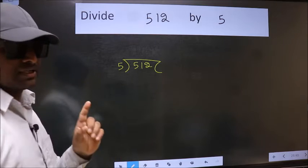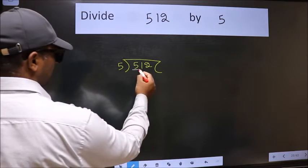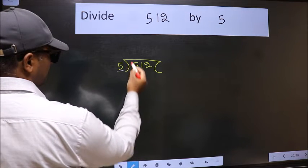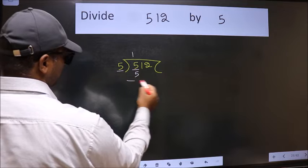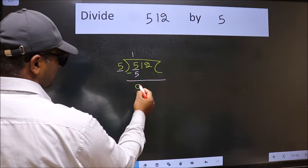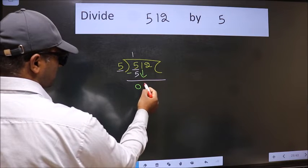This is your step 1. Next, here we have 5 and here also 5. When do we get 5 in the 5 table? 5 times 1 is 5. Now we should subtract. We get 0. After this, bring down the beside number, so 1 down.